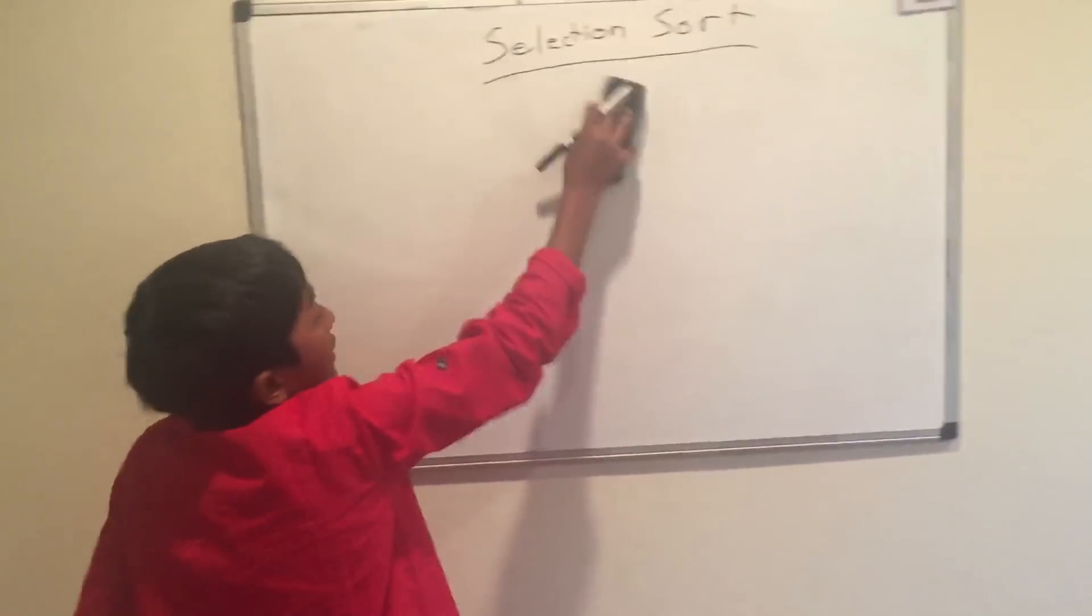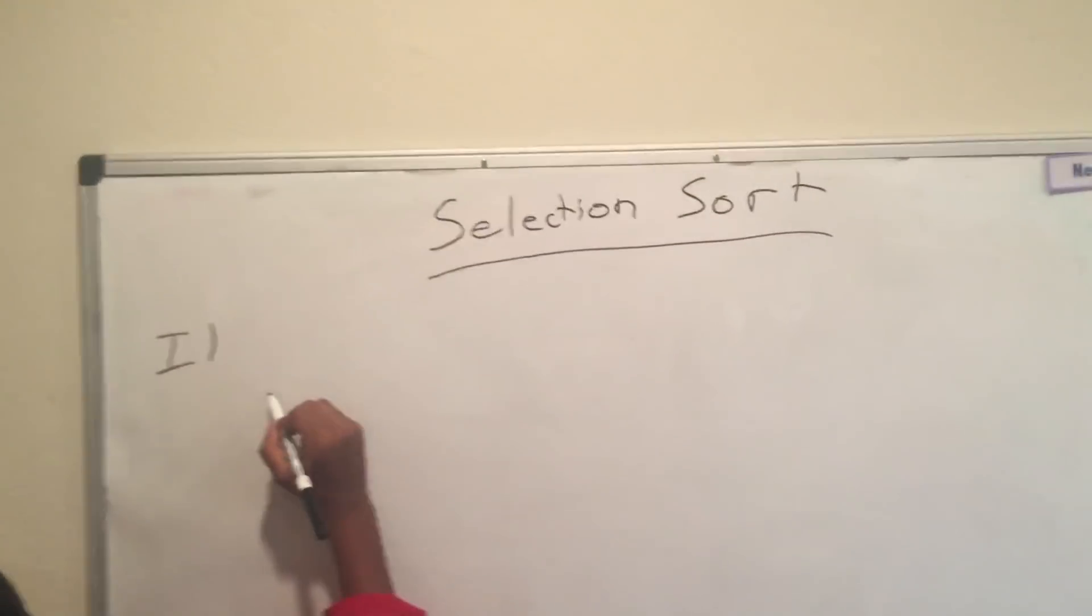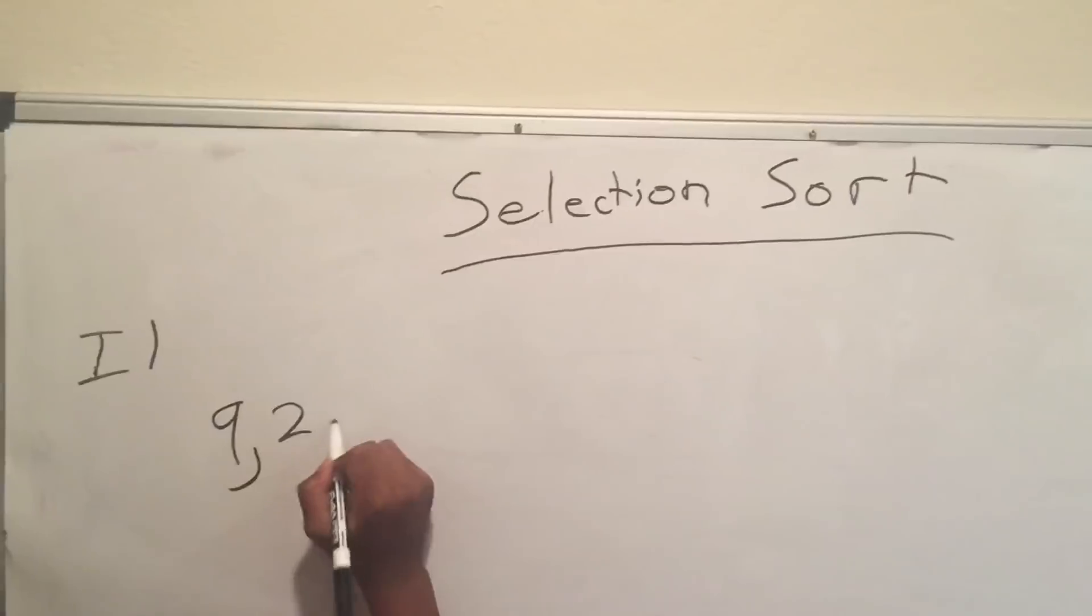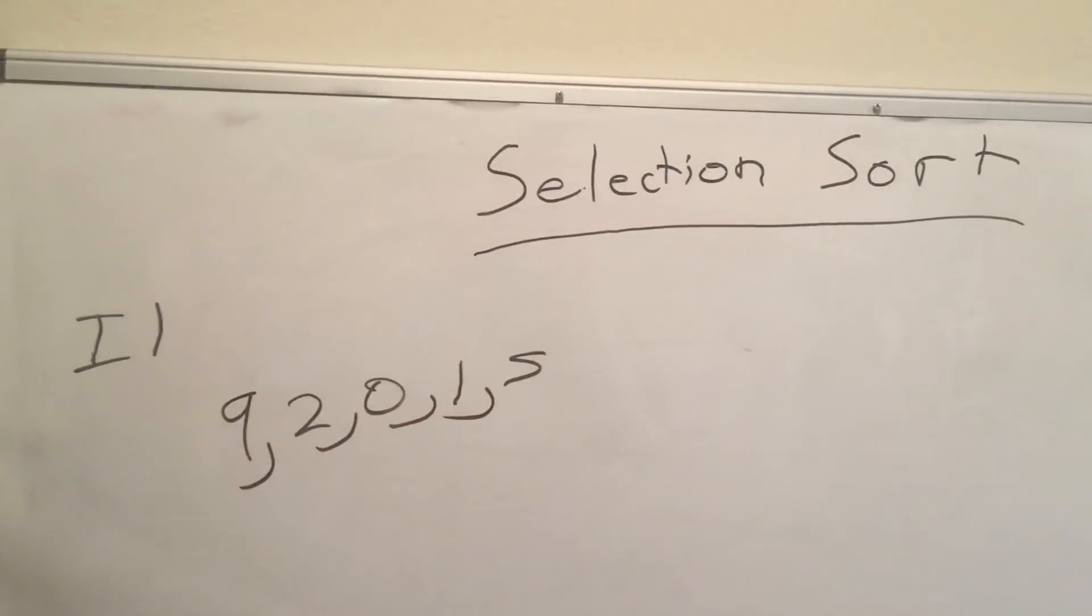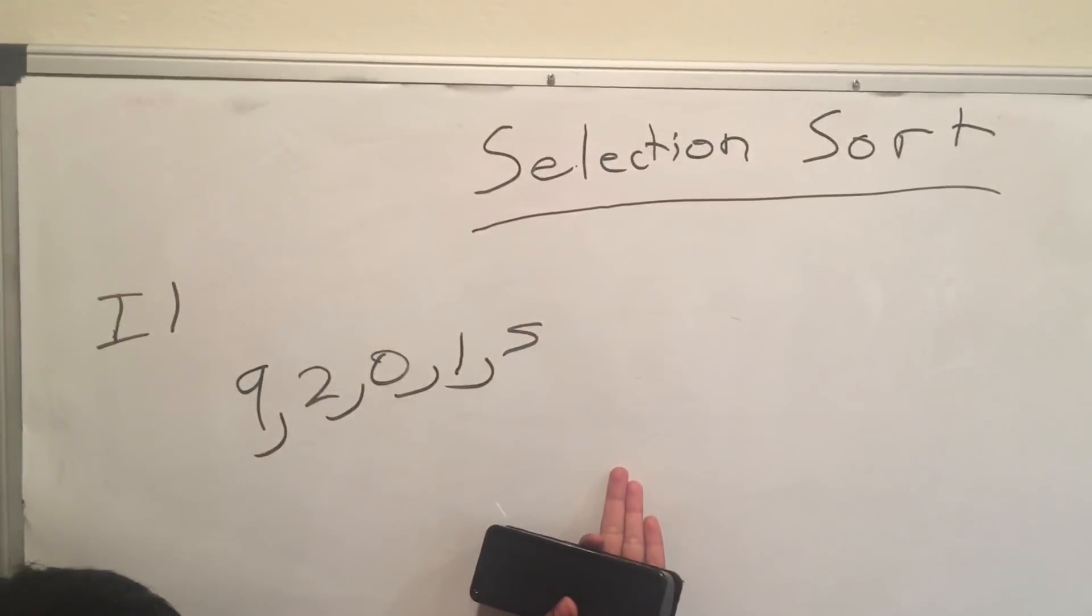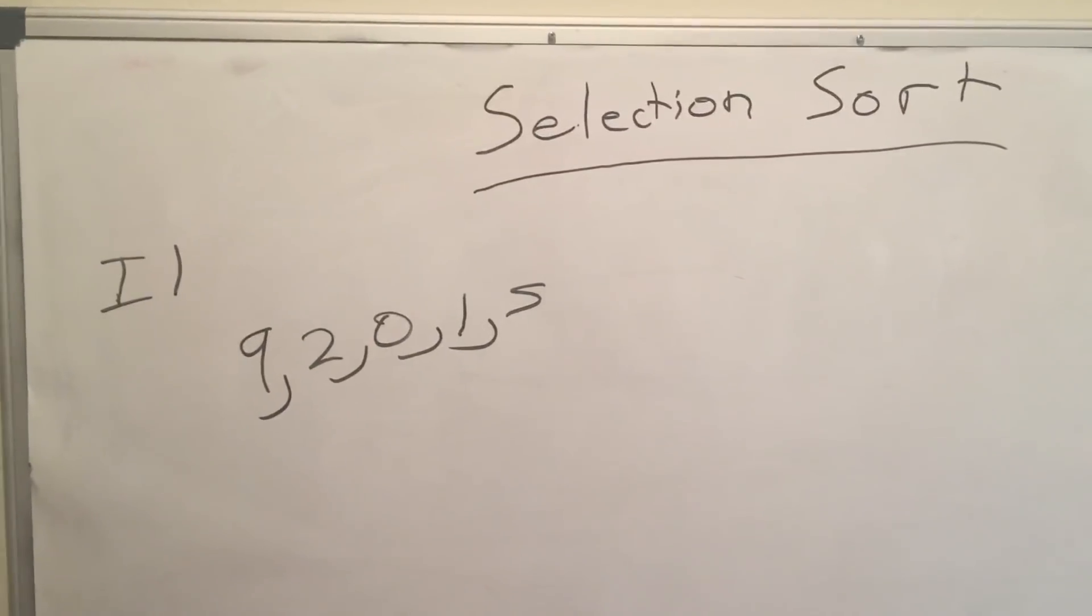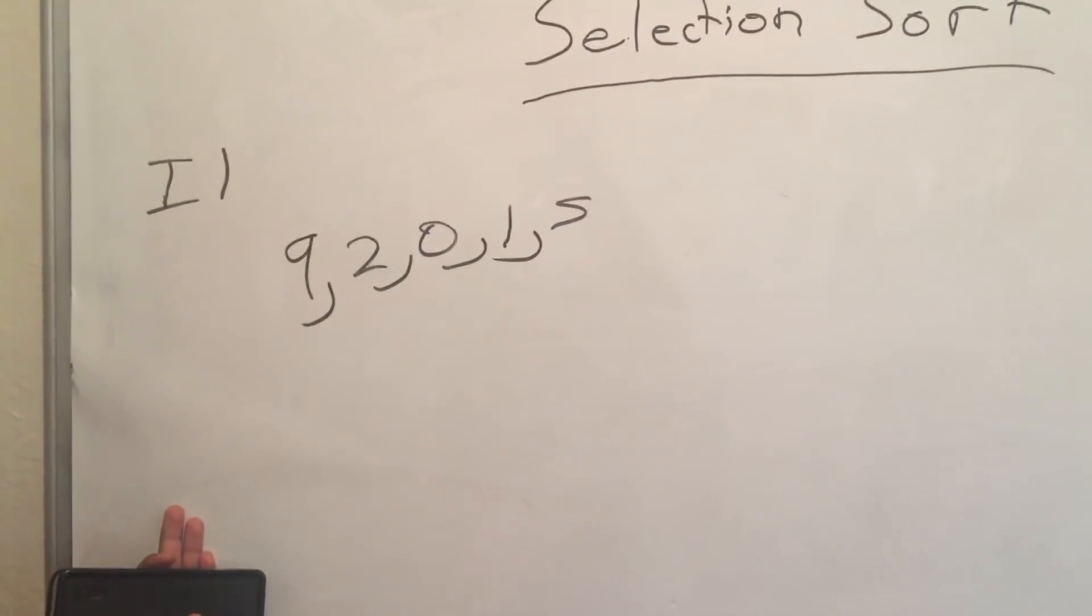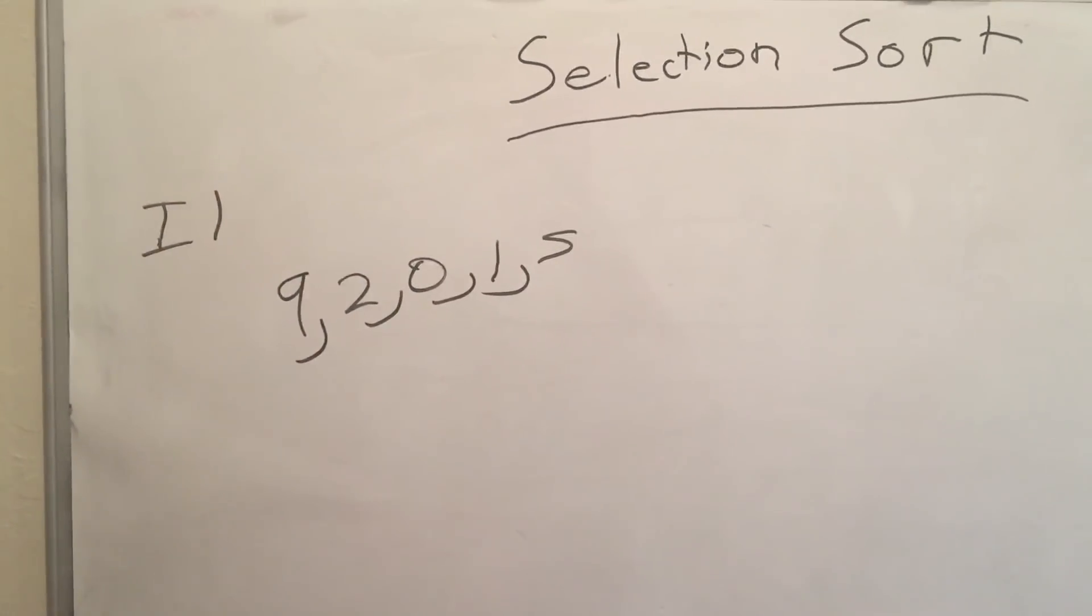So, let's start. Iteration 1. You have this list. You want to get it from least to greatest. If you do it from greatest to least, you do the same thing, but instead of doing the least and bringing it over here, you do the greatest.